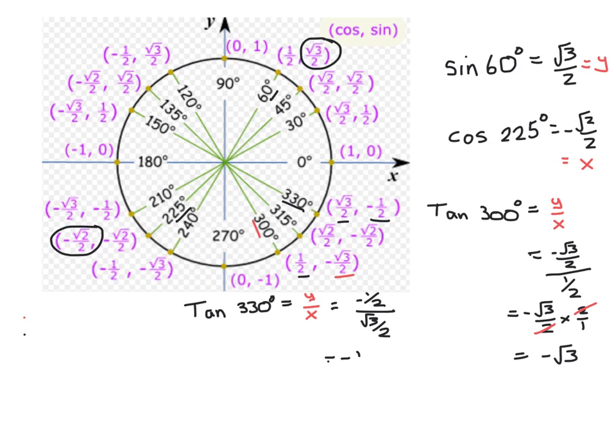So we get negative 1 over 2 times 2 over root 3, because we flip the fraction and multiply. Those 2's will cancel out. And we get negative 1 over root 3. And if you remember back to your radical days, we get rid of the radical on the bottom by multiplying by root 3 over root 3. And that gives us negative root 3 over 3, standard answer.